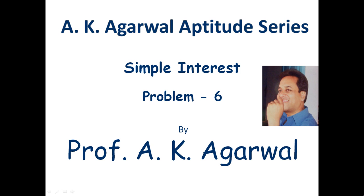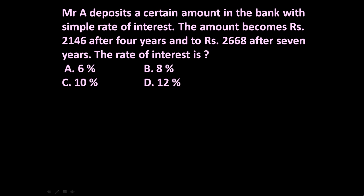Hello friends and welcome to AK Agrawal Aptitude series. In this session we are going to learn a technique for solving a problem on simple interest. The given problem is: Mr. A deposits a certain amount in the bank with simple rate of interest. The amount becomes Rs 2146 after 4 years and Rs 2668 after 7 years. Find the rate of interest.